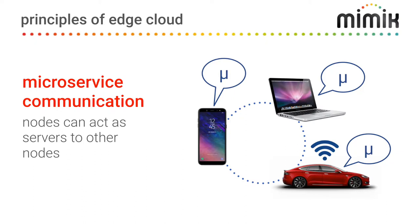Another important principle is microservice communication. Microservices are generally programs run on the backend to provide services to an application. To decentralize the cloud, a device needs to be able to act as a server — which means it needs to be able to host a microservice. Any device should be able to support microservices in order to communicate with another device. If you don't do this, you end up again with the central cloud architecture, because that's where microservices are hosted today.